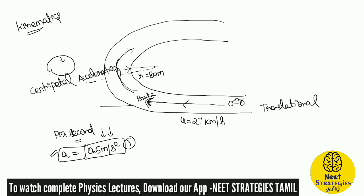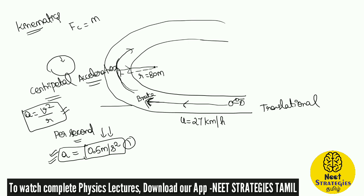Apart from this normal acceleration guys, what is this centripetal acceleration? It is given by a = v²/r. Formula revision: centripetal force = mv²/r. This v²/r equals centripetal acceleration — that is ac = v²/r. Clear.